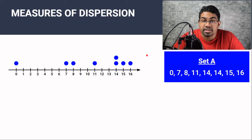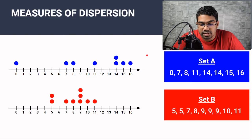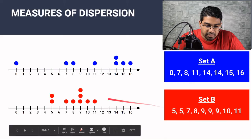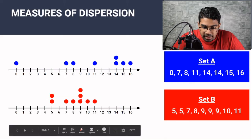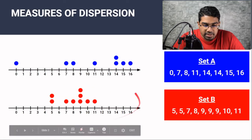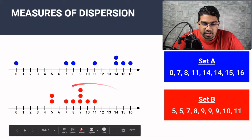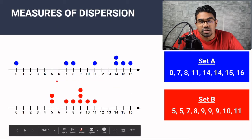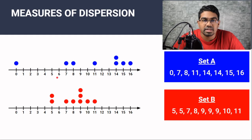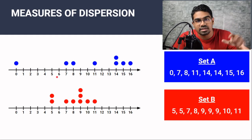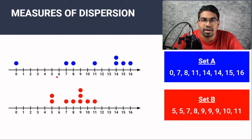Then we compare it to another set of data. Let's look at set B. Here we have 5, 5, 7, 8, 9, 9, 9, 10 and 11. So you can see this is a different pattern of scattering, of dispersion. Measures of dispersion is a quantitative way of representing how dispersed the data are.